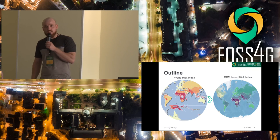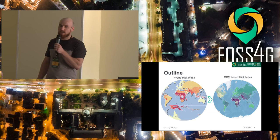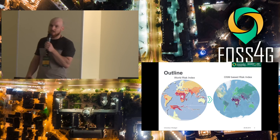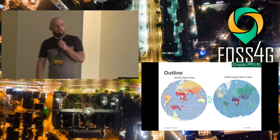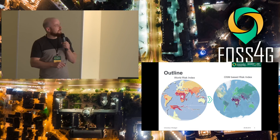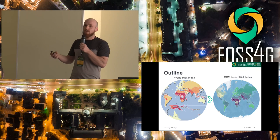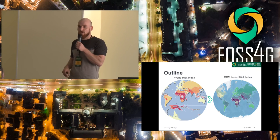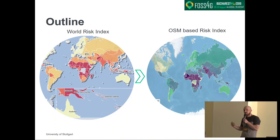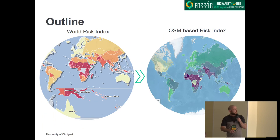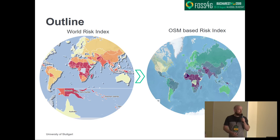A brief outline of my talk: since this is not a disaster risk conference, I'll first give some background on the World Risk Index and the idea development, to understand what socio-economic vulnerability is — because I assume you are not very familiar with this concept. Then the second step is how to derive an OpenStreetMap vulnerability index on a global scale.